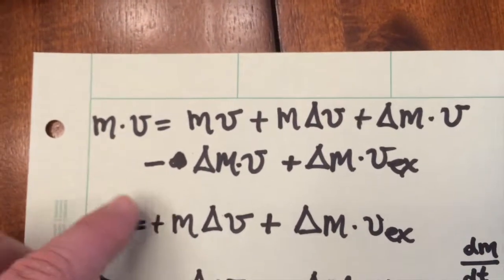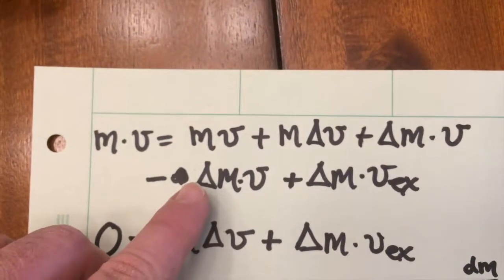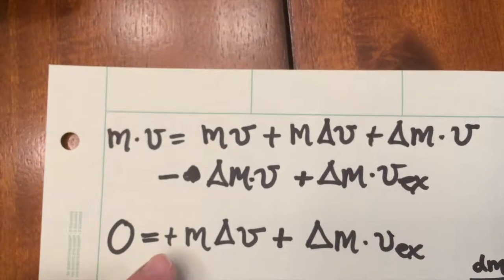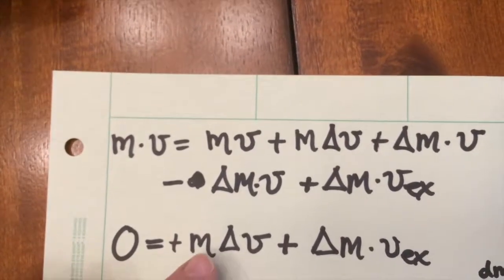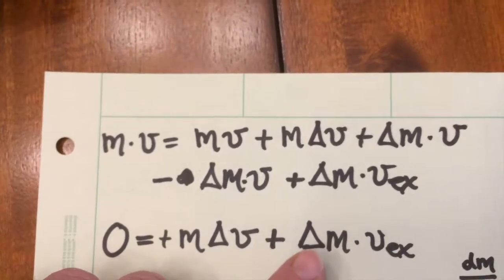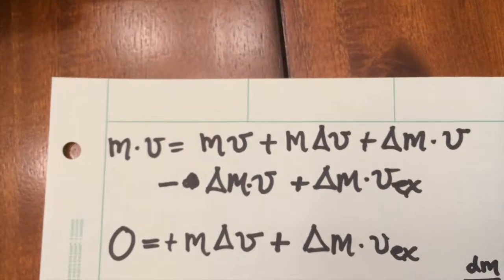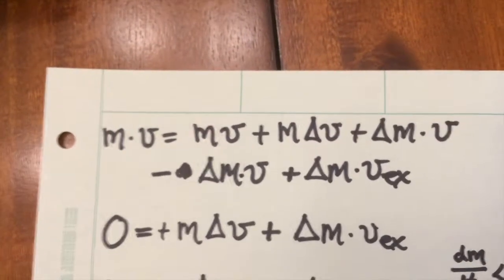And then a couple of other terms cancel out as well. Delta m times v minus delta m times v, and what we're left with on the right-hand side is m times delta v, plus delta m, the little bit of mass that's left the rocket, times the v exhaust, the velocity with which the exhaust has left the rocket as measured relative to the rocket.